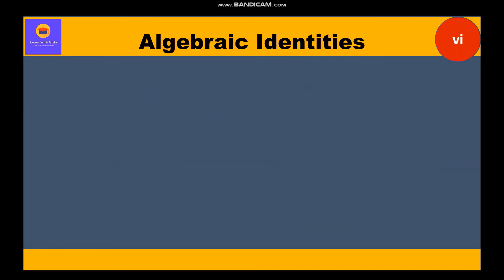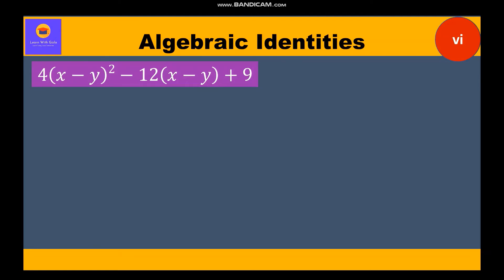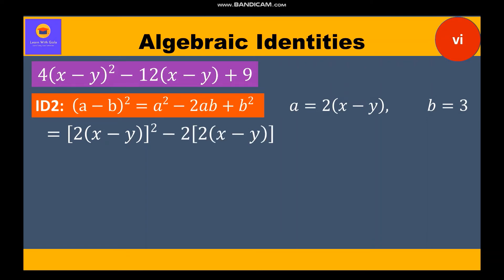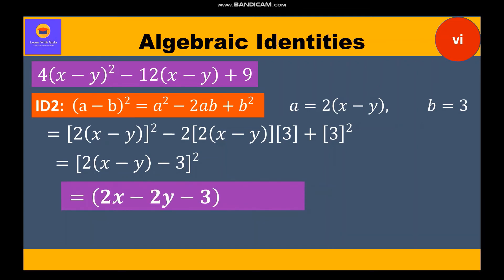Question 6: factorize (4x - y)² - 12(x - y) + 9. There is one negative term and the other two terms are perfect squares, so it is clearly identity 2. Here a = 2(x - y) and b = 3. Substituting into identity 2, we write [2(x - y)]² - 2·2(x - y)·3 + 3², giving the factor as (2(x - y) - 3)².